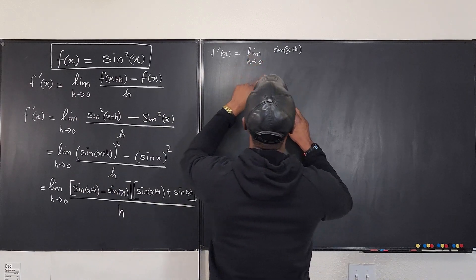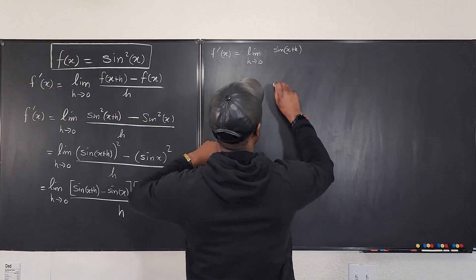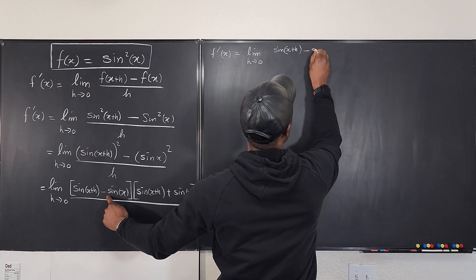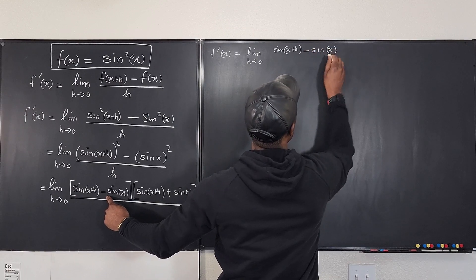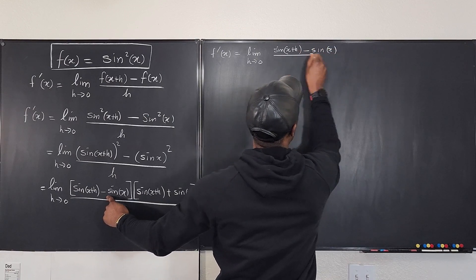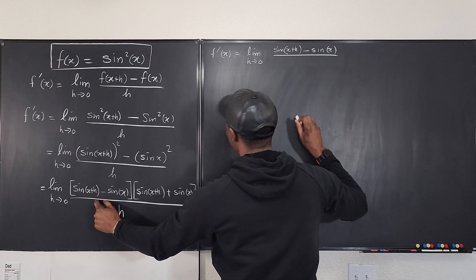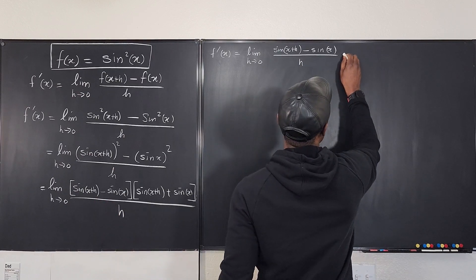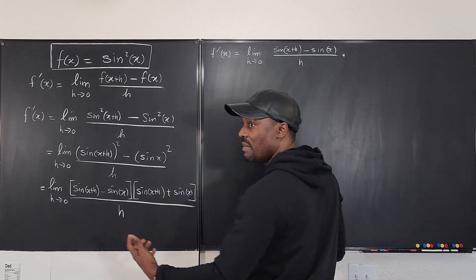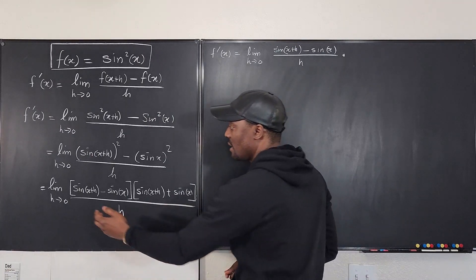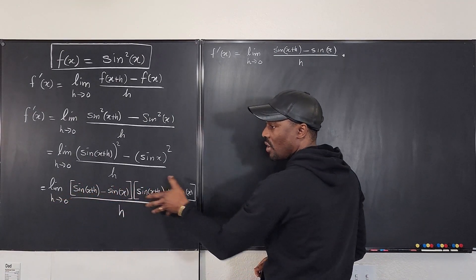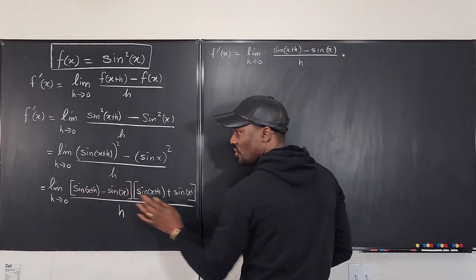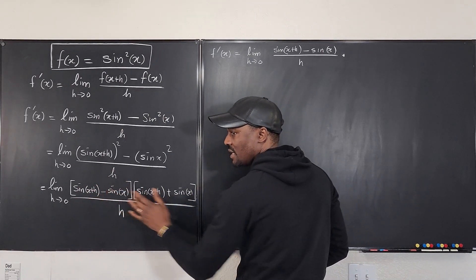This is going to be the limit as h goes to zero of sine(x+h) minus sine x divided by h — I'm giving the h to just this part. Then I multiply, using the limit law that the limit of a product is the product of the limits, as long as each of the limits exists.